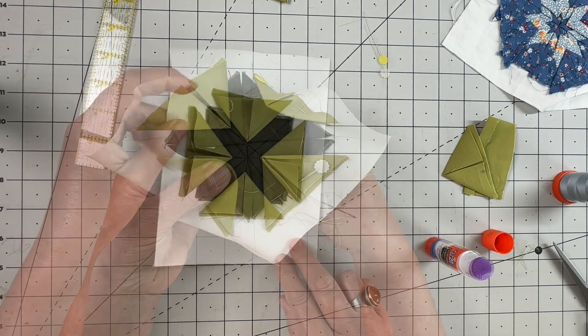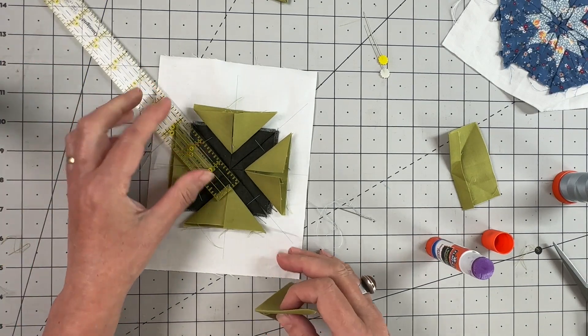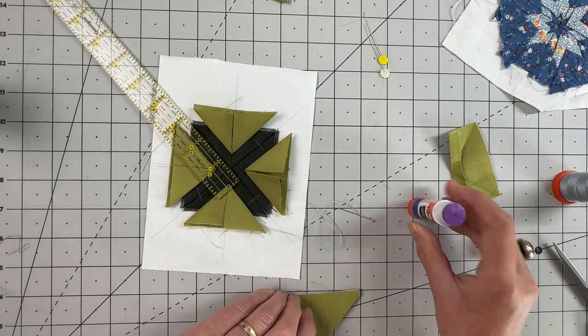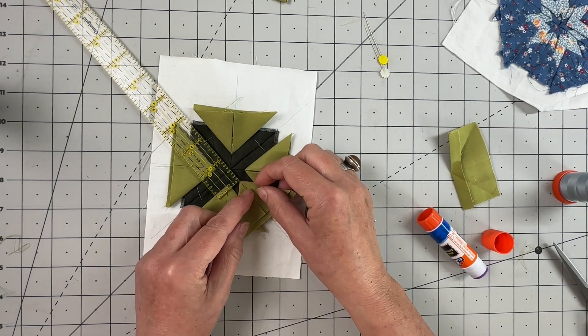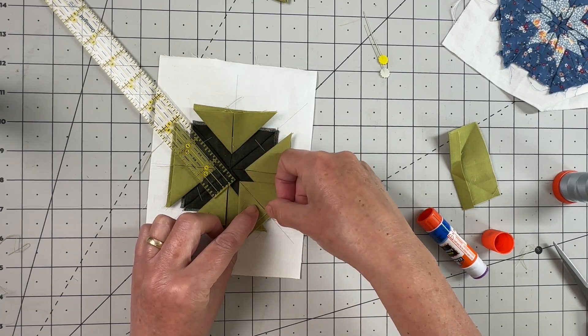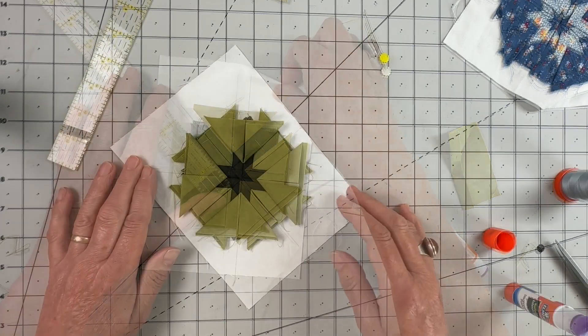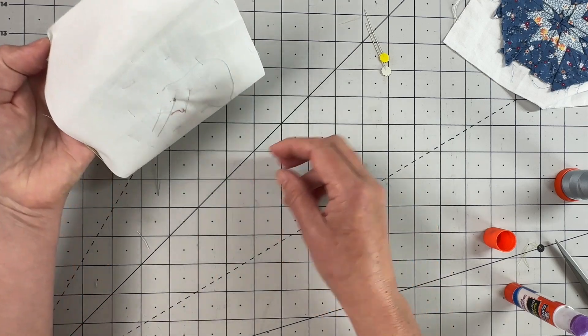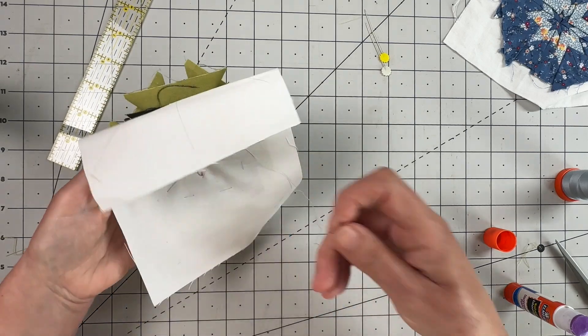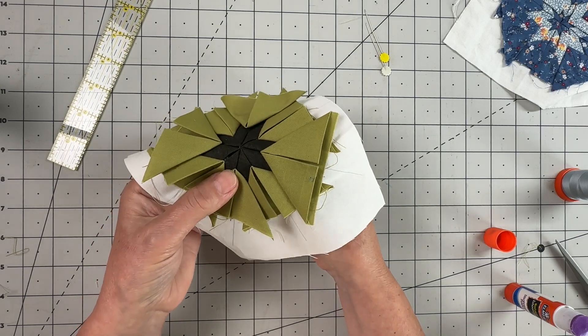Once you have those four in position, you can then measure out from the center and just place your next diagonals on top, making sure that that line runs along the line of your grid. Once those four are in position, you can then take your needle and thread and just catch those other four in place.